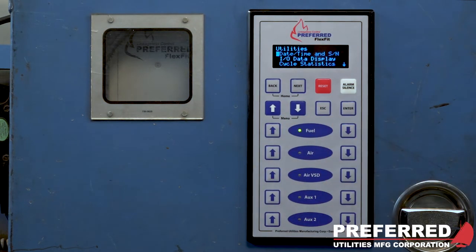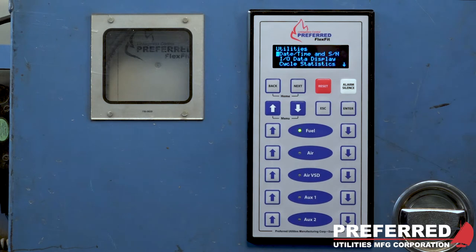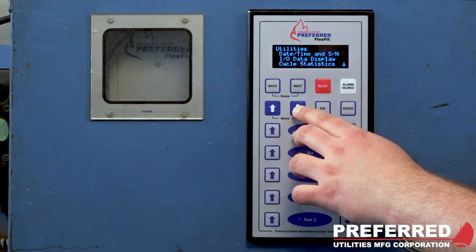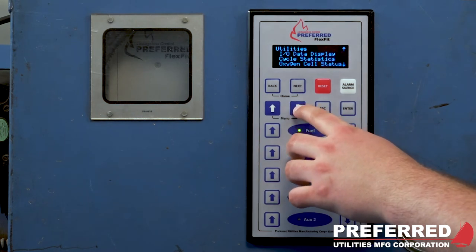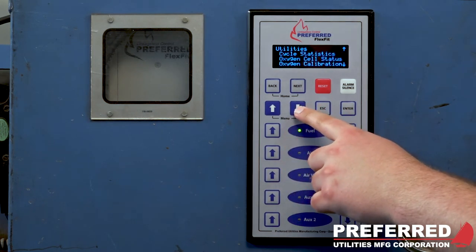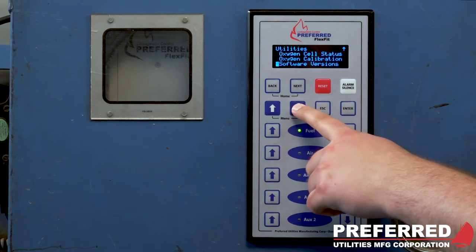Below that is utilities, where you can access your date, time and serial number, as well as a complete I/O display for all of your inputs and outputs. And you can also get to your oxygen calibration from the utilities menu.